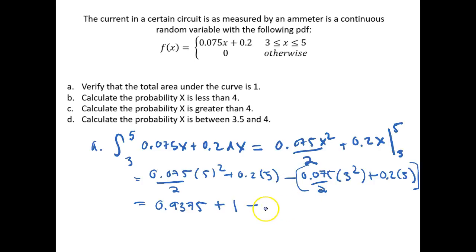minus 0.075 divided by 2 times 3 squared is equal to 0.3375. And if we multiply through this negative sign, we get this to be a subtraction. So minus 0.2 times 3, which is 0.6. So if we add all of these together, we find that this is equal to 1. So yes, this is a true probability density function in that the area under the entire curve is equal to 1 within the bounds.